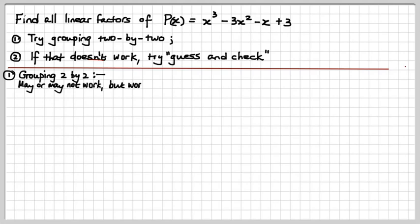Now, grouping by two, watch this. It's absolutely marvelous. It may or may not work, but it's worth a try in the first instance because it just makes short work of the whole thing. If I group those first two terms together by taking x² out, and if I just simply then take minus one out of these two, you watch. It's like a miracle.